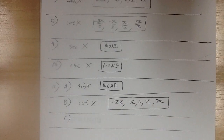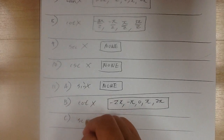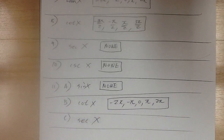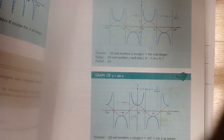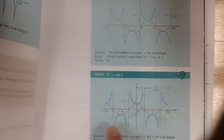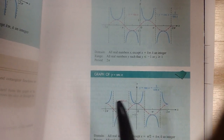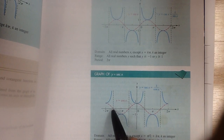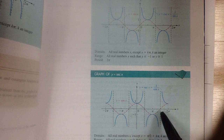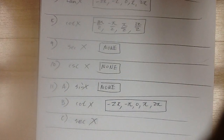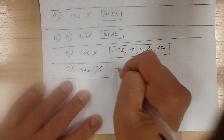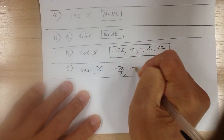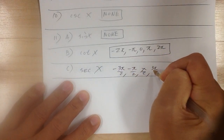For 11c, secant x — the undefined values are where the asymptotes are. Looking at the secant graph, the asymptotes are at negative 3pi over 2, negative pi over 2, positive pi over 2, and positive 3pi over 2.